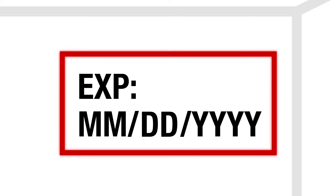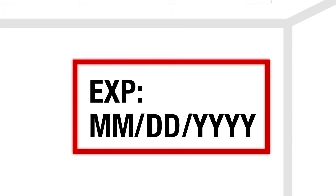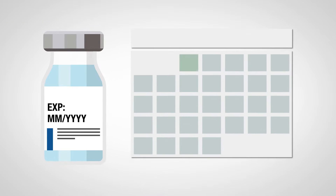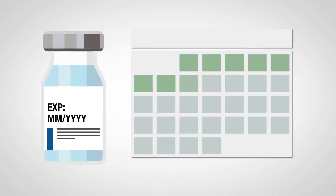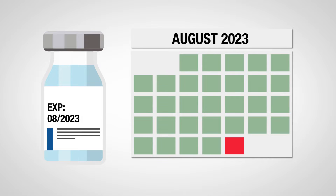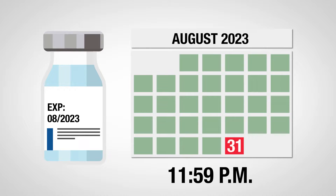The date may be indicated as a month and year, or month, day, and year. In the case of month and year, the vial can be used up to and including the last day of the month. For example, if the date is August 2023, the vaccine may be used through 11:59 p.m. on August 31, 2023.